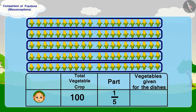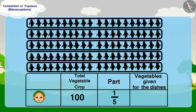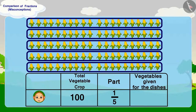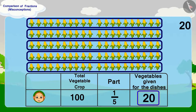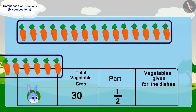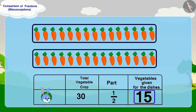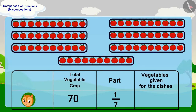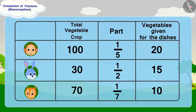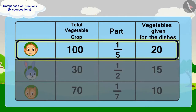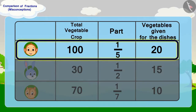Well done, children. You have found the right answer. Babban gave one-fifth of 100, which is 20 vegetables. Banni gave half of 30, which is 15 vegetables, and Chanda gave one-seventh of 70, which is 10 vegetables. Babban has said the right thing — he has given the most vegetables for the dish, therefore he should get the largest part of the dish.